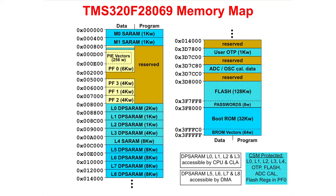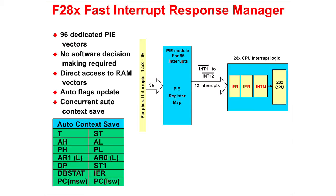Memory blocks L0 through L8 are grouped together. L0 through L3 are accessible by the CPU and CLA. L5 through L8 are accessible by the DMA. The user OTP is a one-time programmable memory block. TI reserves a small space in the map for the ADC and oscillator calibration data. The flash block contains a section for passwords, which are used by the code security module.